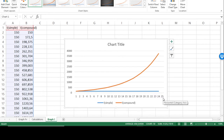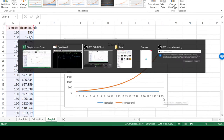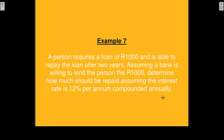Example 7 is a repetition of example 1 that we did for simple interest, except now we are working with compound interest. A person requires a loan of 1,000 rands and is able to repay the loan after 2 years. Determine how much should be repaid, assuming the interest rate is 12% per annum compounded annually.